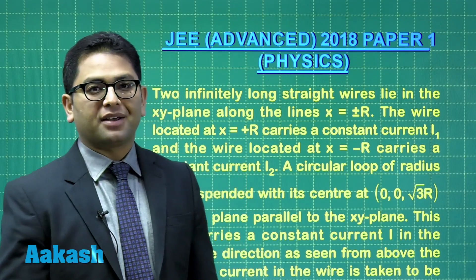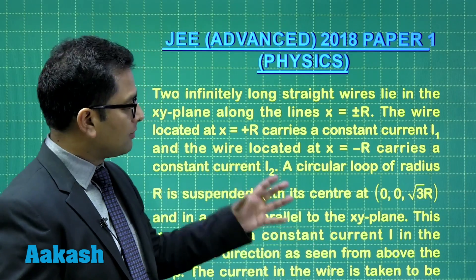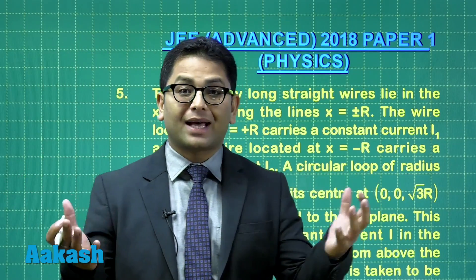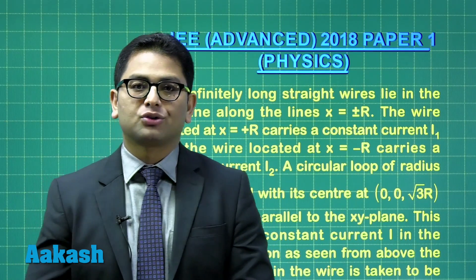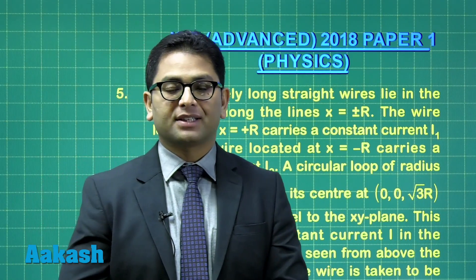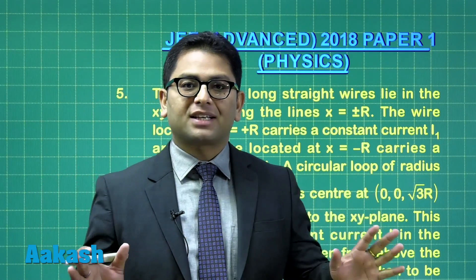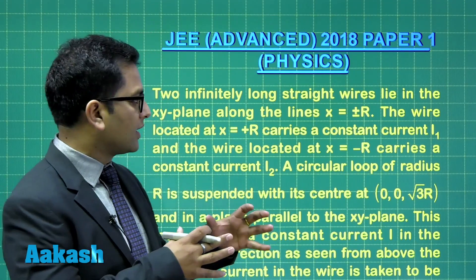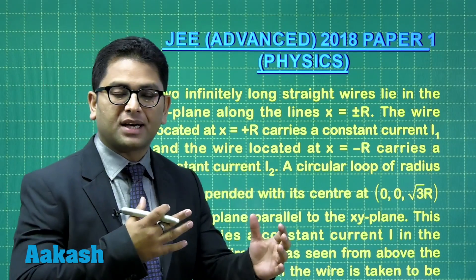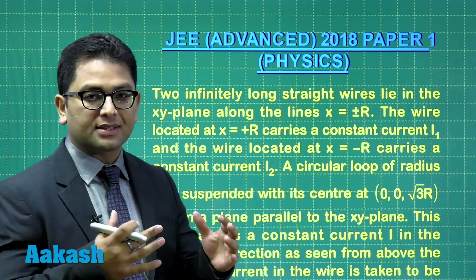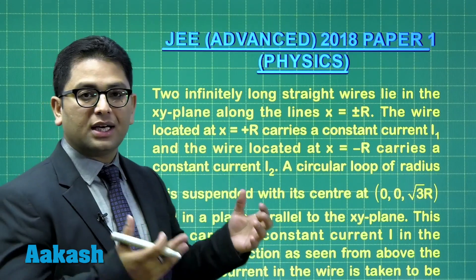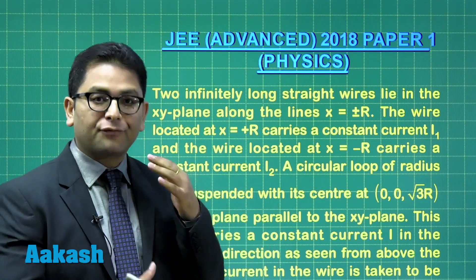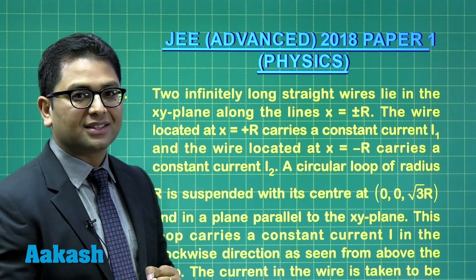Question number five, this is from magnetism, where you need to calculate the magnetic field due to different arrangements. The numerical is not difficult, but all you require is a presence of mind, because the question would be asking you about the magnetic field at different permutation and combination.